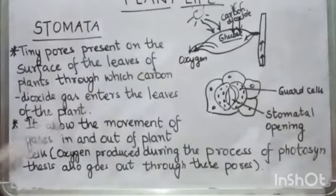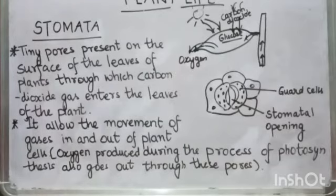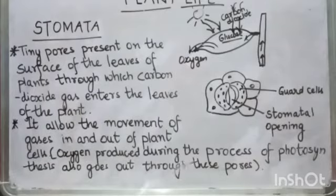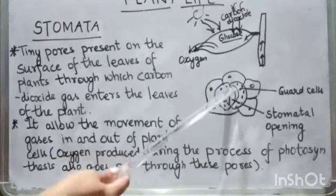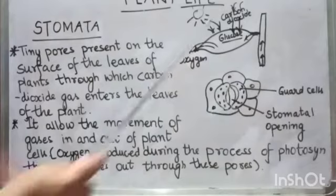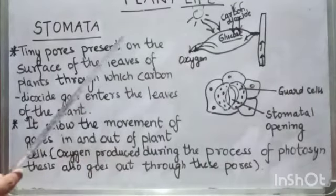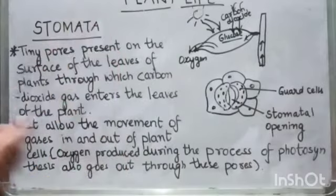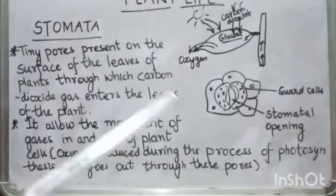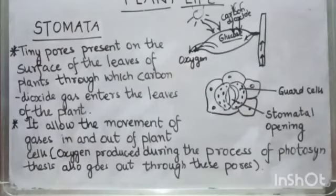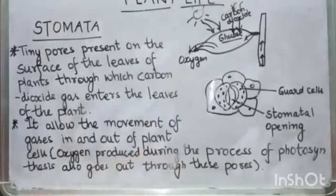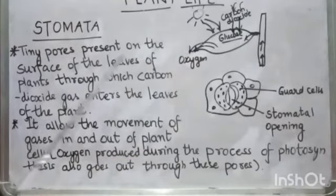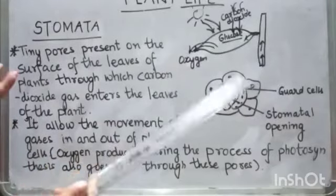Now comes the working of stomata — how stomata work. When water flows into the guard cells, they swell, meaning they increase in size and become curved, as you can see from the shape of the guard cells here. This curved shape causes the stomata opening or pore to open. Then when the guard cells lose water, they shrink — they decrease in size and become straight — and when they become straight, the stomata pore closes.